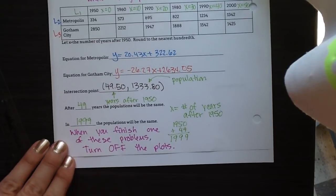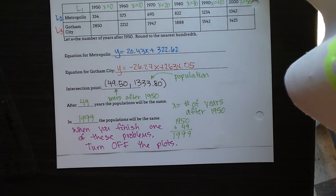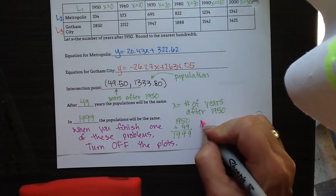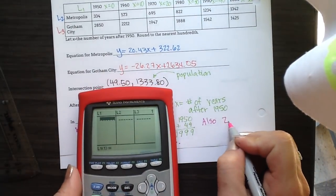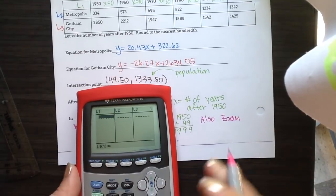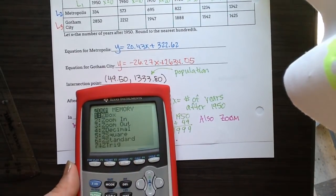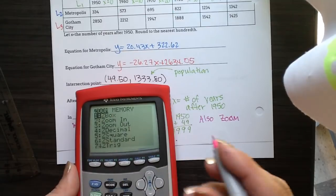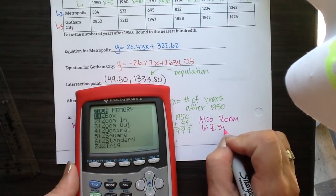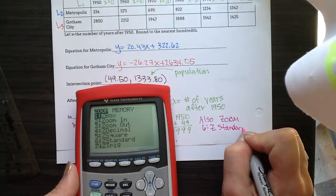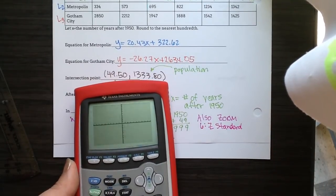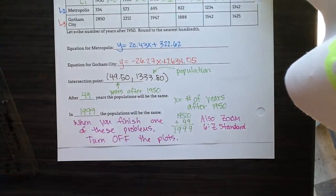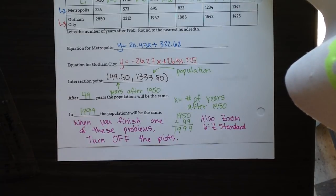One other thing to consider when you finish is setting your graph back to the standard viewing window. In the ZOOM menu, choose number six, ZStandard. Then your calculator will be set back to the regular grid and ready to graph something that's not a statistics problem.